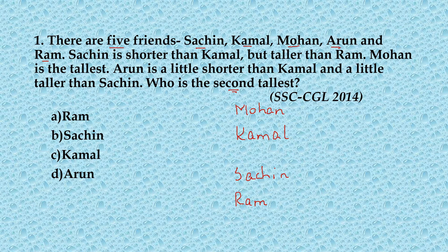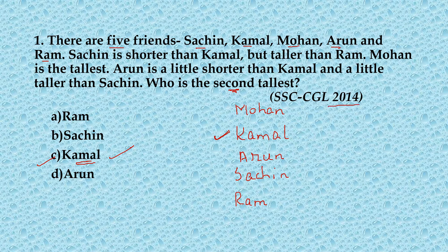Arun is a little shorter than Kamal and a little taller than Sachin, so Arun comes between Kamal and Sachin. Kamal is above Arun. So the second tallest is Kamal. The correct answer is option C, that is Kamal. This is a previous year question which appeared in the SSC CGL exam in the year 2014.